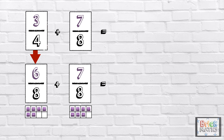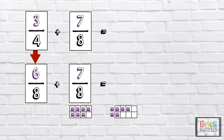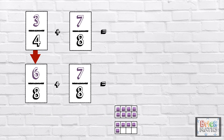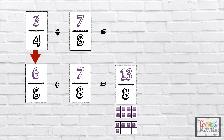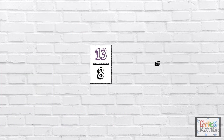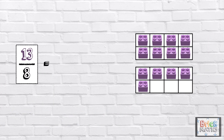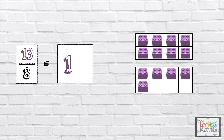Now that the denominators are the same, we can add the fractions. 6 eighths add 7 eighths equals 13 eighths. We can turn the improper fraction into a mixed number: 1 whole and 5 eighths.